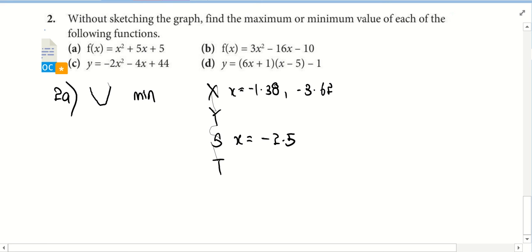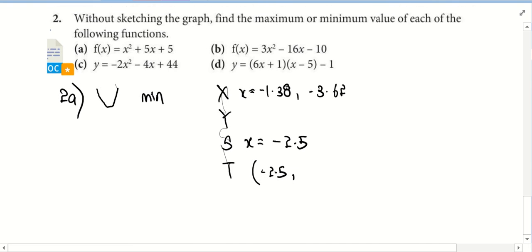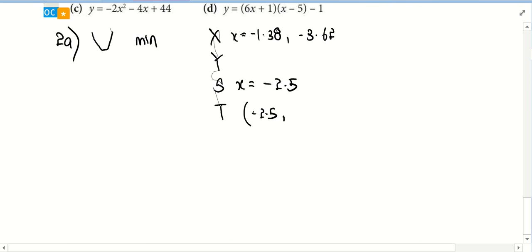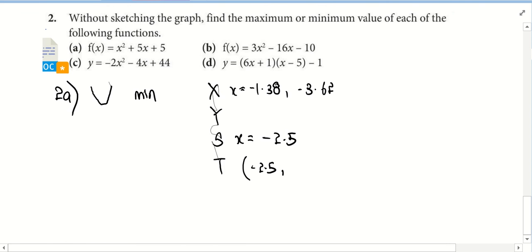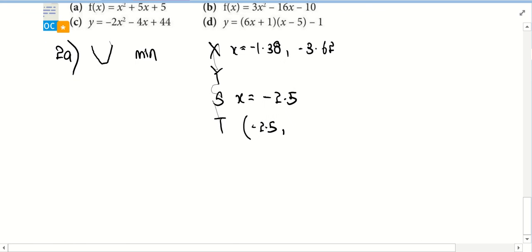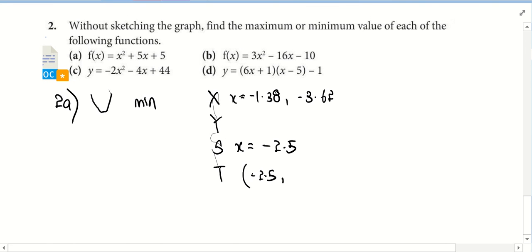Okay, am I right to say that the line of symmetry is negative 2.5? Means the turning point is negative 2.5 for the x-coordinate. Can you substitute the value negative 2.5 into the equation now and tell me what is the y-coordinate? Negative 1.25.